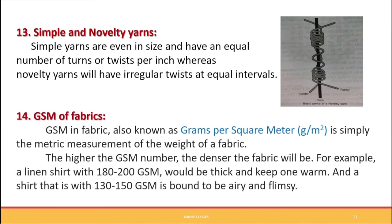GSM stands for Grams Per Square Meter and refers to the weight of the fabric. For example, a net-like or netted material will have a very low GSM, whereas denim material will have a very high GSM.